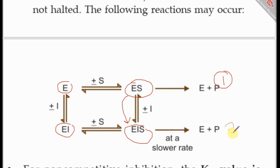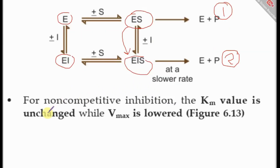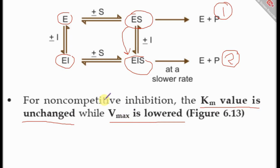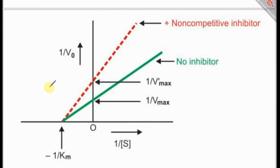Similarly, the enzyme may first bind the inhibitor to form an enzyme-inhibitor complex, and then this complex can still bind the substrate, forming enzyme-inhibitor-substrate, which leads to product formation but at a slower rate. Therefore, for non-competitive inhibition, the KM value is unchanged while only the Vmax is lowered. The graph shows a decrease in Vmax with an intact KM.